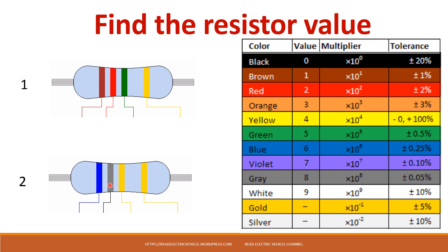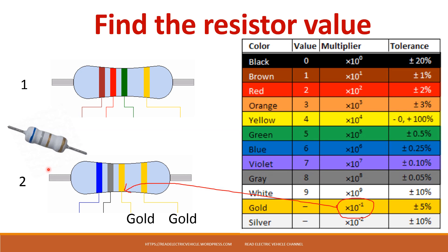The second question: you have blue, gray, and gold as the third band. Normally we have seen gold in the tolerance position, but if gold appears as the multiplier band, what is its value? This resistor will look like blue-gray with a gold multiplier and another gold tolerance band. Remember that gold as a multiplier means 10 power minus 1, so use that to find the value and write it in the comments.